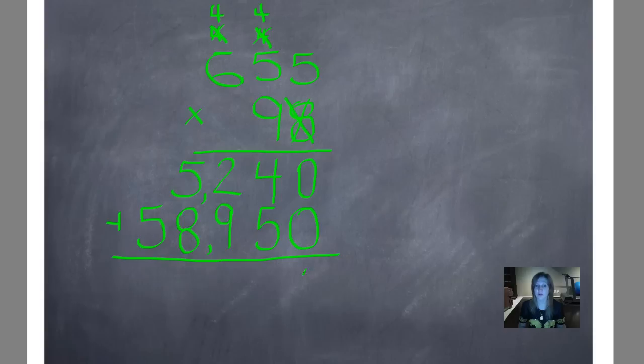And now we'll add up our partial products. 0 plus 0 is 0. 5 plus 4 is 9. 9 plus 2 is 11. Carry my 1. 5 plus 1 is 6 plus 8 is 14. And 5 plus 1 is 6. So this is our final answer. But this is a huge number. So we're totally going to check it using digital root.